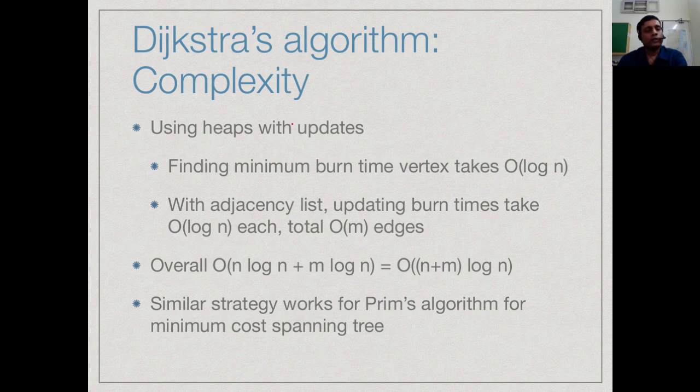As we saw before now we can use this heap with this update operation and find the minimum time vertex in log n time and because we have adjacency lists over the all the loops updating the burnt times takes log n time per edge and there are totally order m edges.